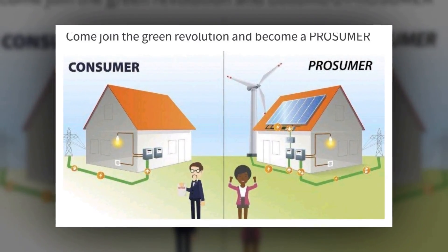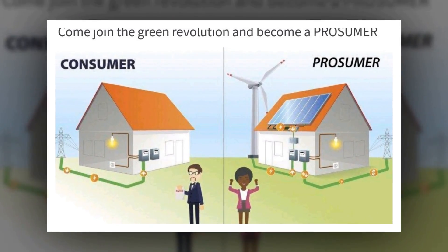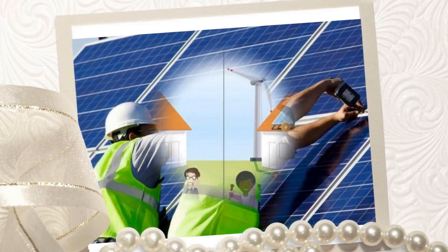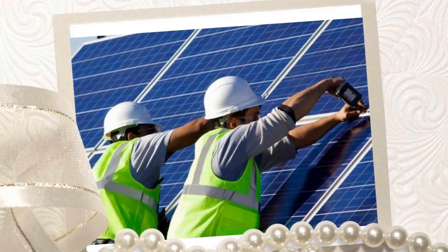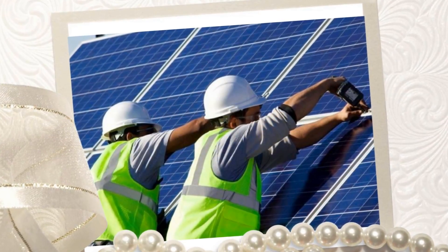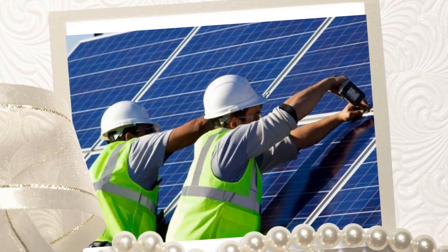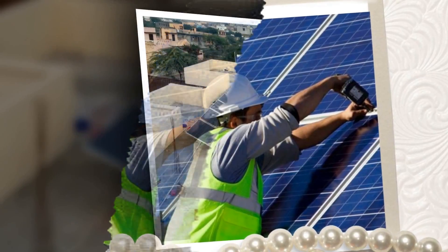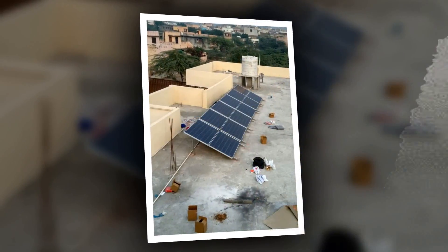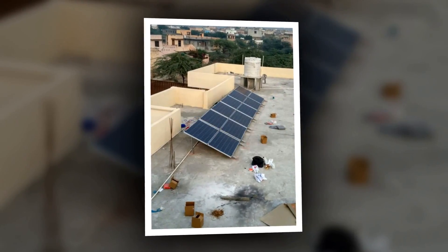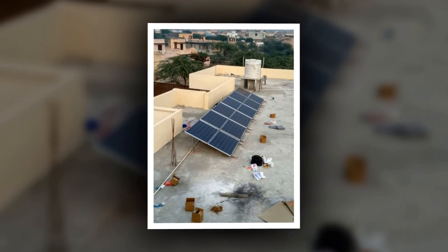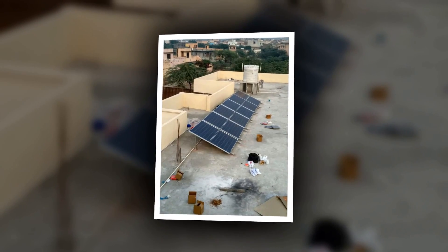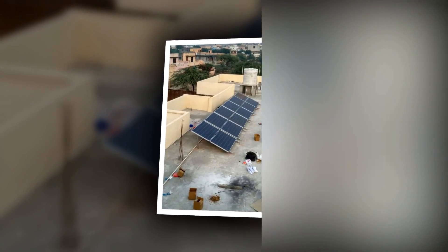Step 2: Determine the required size and type of the solar power plant in watts. On-grid, hybrid and off-grid solar power plants range from 1 to 500 kWp in the residential, social, institution as well as commercial sector.